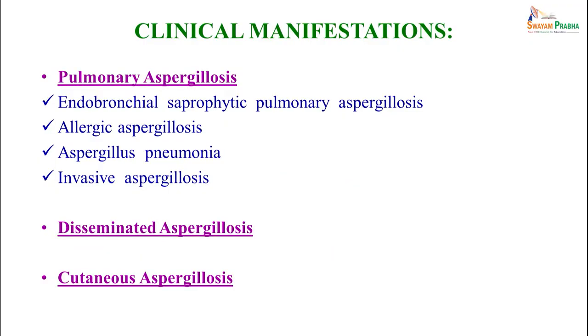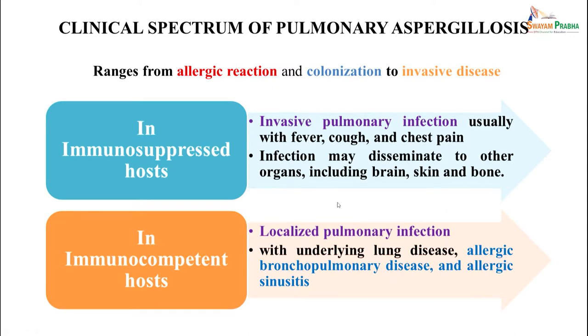Clinical manifestations include pulmonary aspergillosis, disseminated aspergillosis, or cutaneous aspergillosis. Pulmonary aspergillosis ranges from allergic reactions and colonization to invasive disease. In immunocompetent patients it causes localized infection, often in those with underlying allergic bronchopulmonary disease or allergic rhinitis and sinusitis. In immunosuppressed patients, invasive pulmonary fungal infection presents with fever, cough, and chest pain, and the infection can disseminate to other body organs.